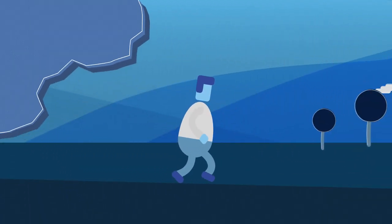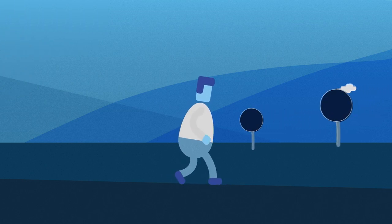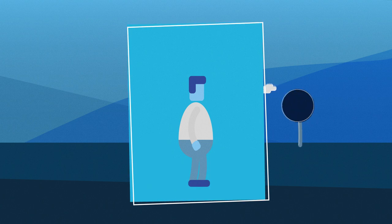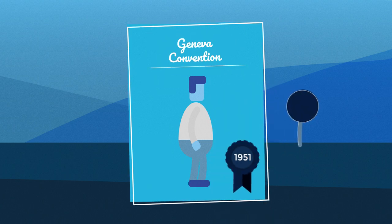Granting asylum to people fleeing persecution, war, or other serious harm in their home countries is an international obligation which was first recognized in the 1951 Geneva Convention on the Protection of Refugees.